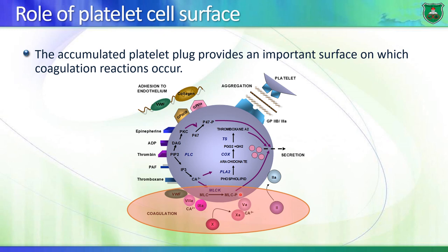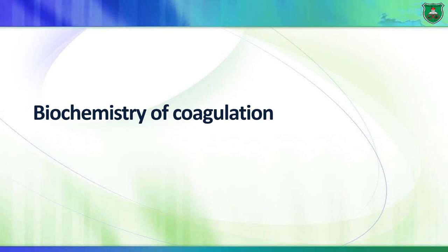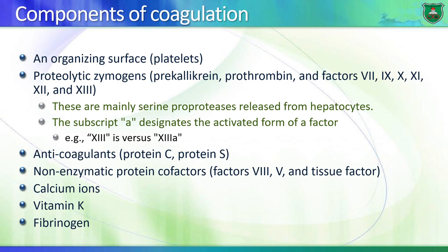The surface of platelets is the theater for the blood coagulation process - the biochemical reactions that lead to blood coagulation. Now let's talk about coagulation - the biochemical reactions that take place in order to form blood clots.